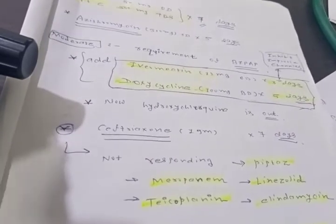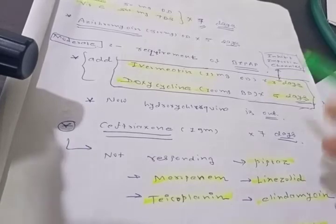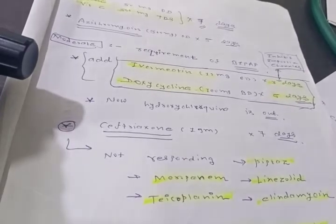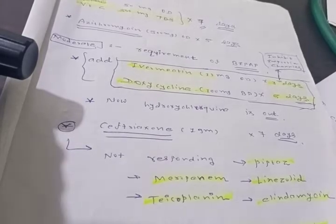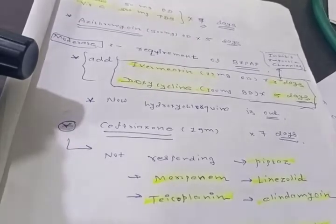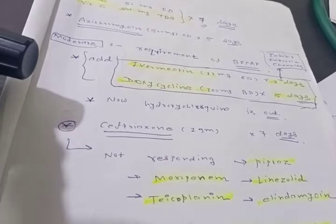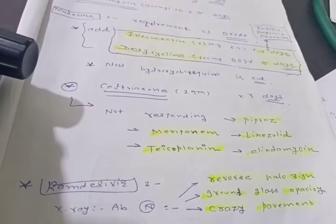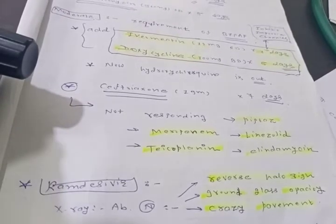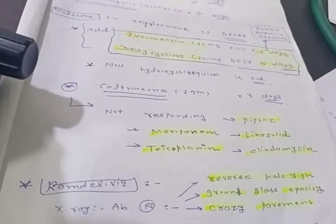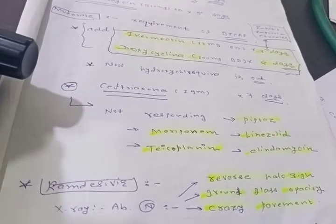If BiPAP is there, we must be ventilating the patient. Secondary infections are very likely if counts are more than 12,000, so we are adding ceftriaxone, which is the first line. If it's not responding after 48 hours, we can increase to piptaz, linezolid, meropenem. If we also suspect anaerobes, clindamycin, and last resort, tecoplanin we can add.